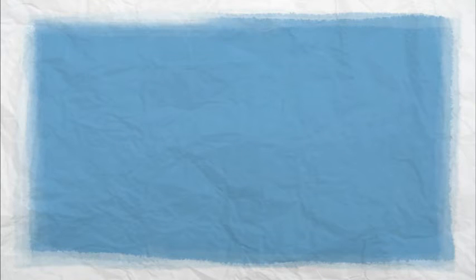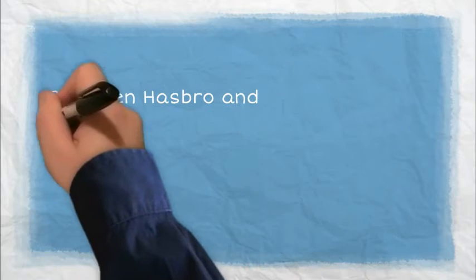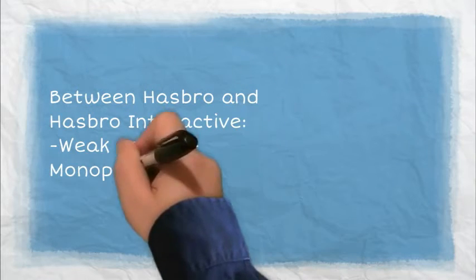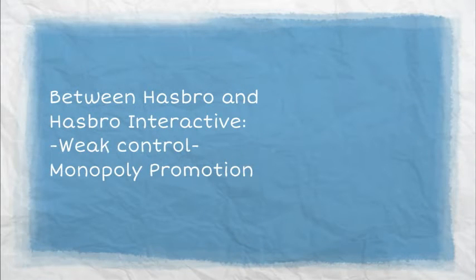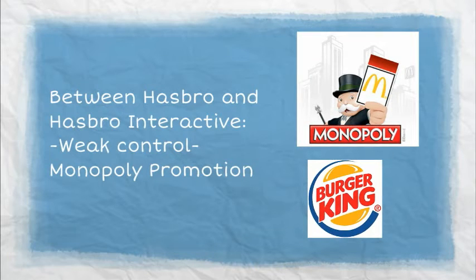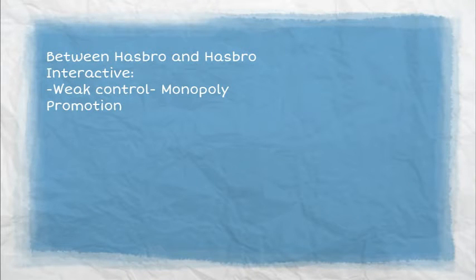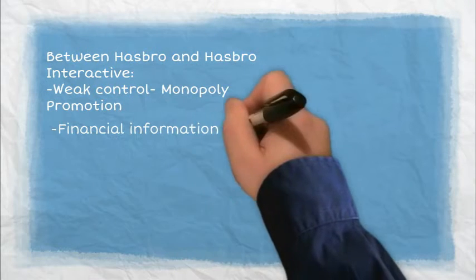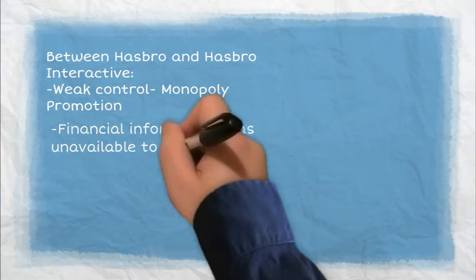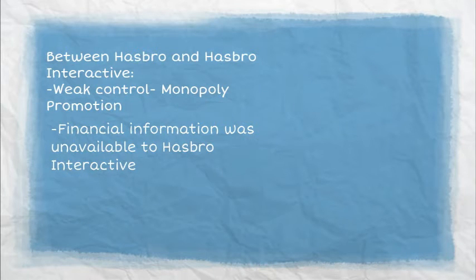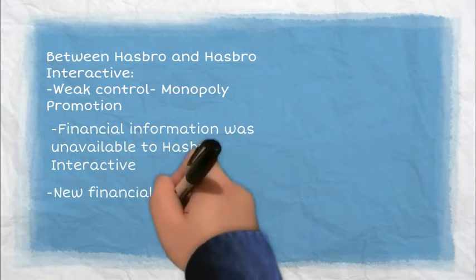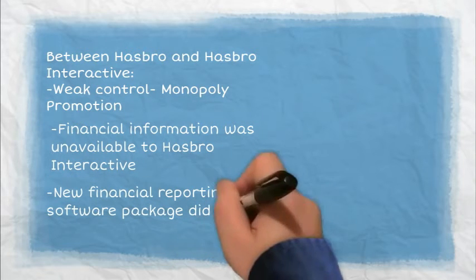There are three conflict issues between Hasbro Interactive and Hasbro. First, Hasbro had weak control on Hasbro Interactive. In 1998, Hasbro Interactive initiated monopoly promotion with Burger King while Hasbro already had monopoly promotion with McDonald's. Second, business information considered standard within Hasbro was unavailable within Hasbro Interactive.